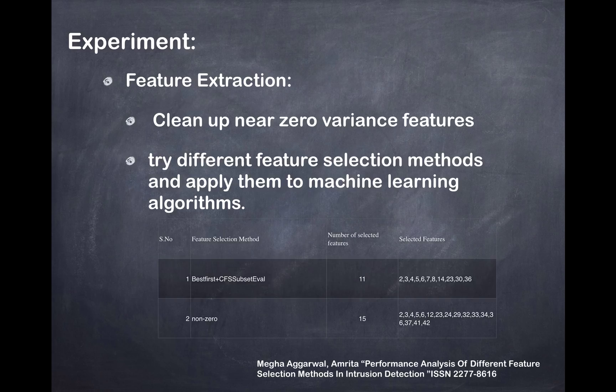As for the feature extraction part, I have two kinds of feature extraction methods. First, it is the near-zero variance feature extraction, in which I clean up near-zero variance features. As for this method, the feature dimension is 15.